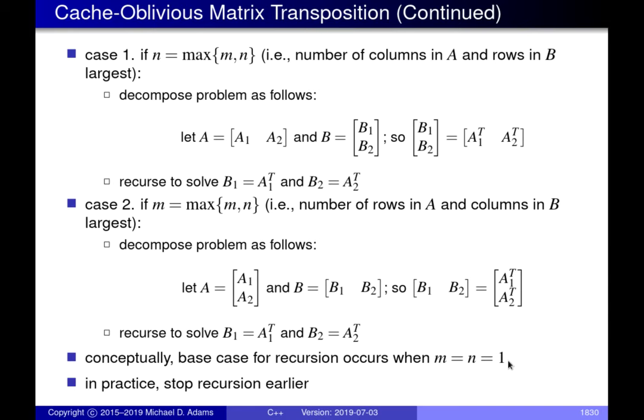In practice, we typically stop the recursion earlier than M equals N equals 1, because as we go deeper into the recursion the number of function calls grows exponentially. We quickly reach a point where the overhead of a very large number of function calls becomes quite significant, so we stop the recursion before going all the way down to M equal N equal 1.